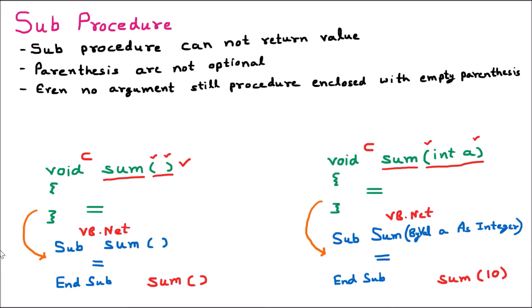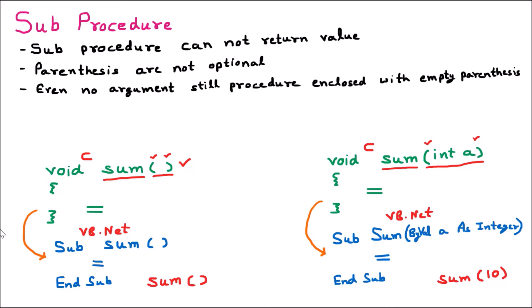When calling a procedure, the procedure name followed by parentheses is required. If there is no parameter, provide empty parentheses. If some parameter is there, provide the name of the procedure and then the required parameter inside the parentheses. This is how we call the sub procedure.